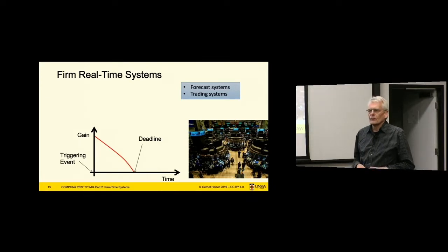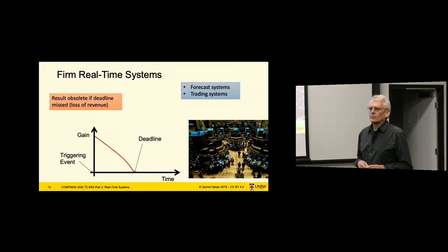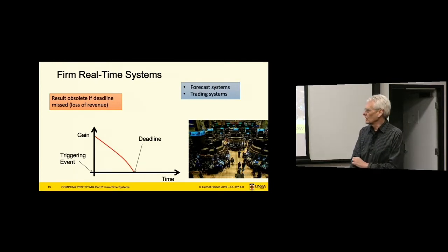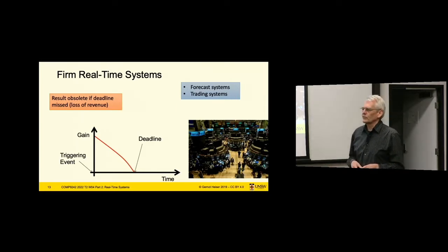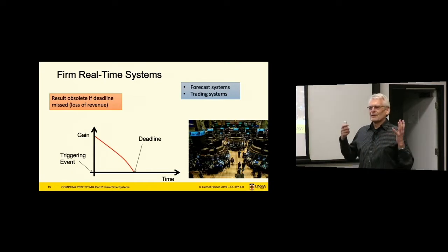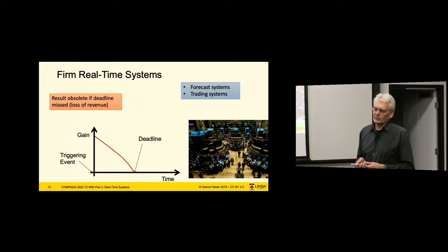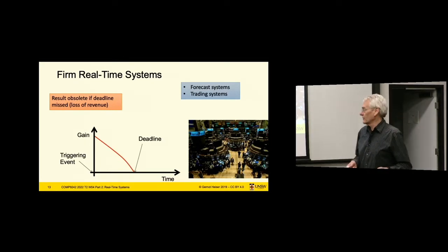Firm real-time systems are basically where failing to meet a deadline is not catastrophic, but it reduces the value of the result. Forecasting systems or high-frequency trading are a good example — if you're a high-frequency trader and you don't deliver your trade by the deadline, you lose money. If it's just a tiny fraction, you probably don't care too much. But it's basically a reduction of quality of service. Weather forecasting is another good example: if you expect your weather bulletin by 4 a.m. and it arrives at 5 a.m., you have to fly on old data.